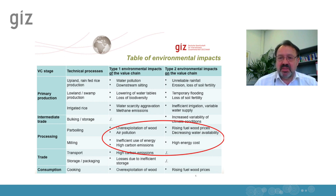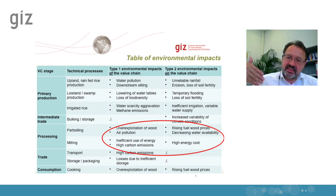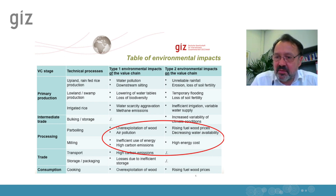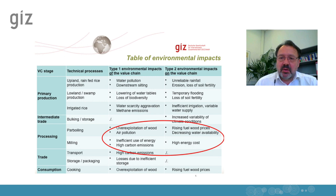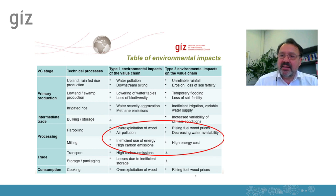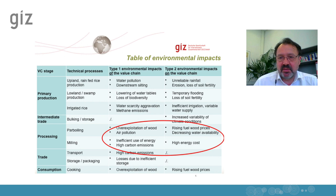Both technical systems are influenced by type two environmental impact on the value chain: there is rising fuel price for par boiling, and high energy costs that negatively influence the competitiveness of milling in our value chain. We would use these two tools — the environmental impact matrix and the table of environmental impacts — to identify and describe the main issues and concerns for our value chain in terms of energy.